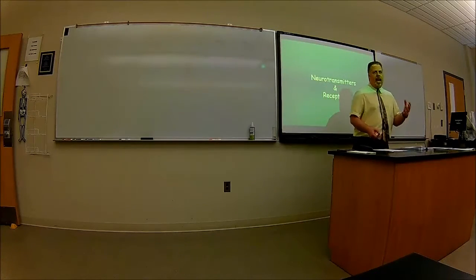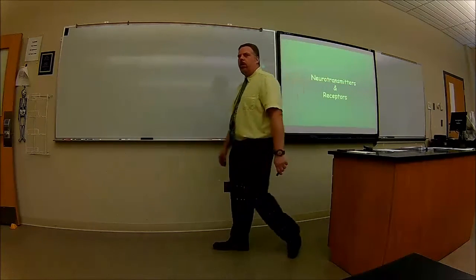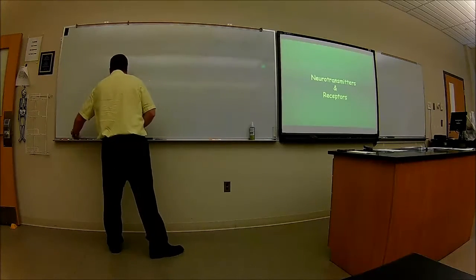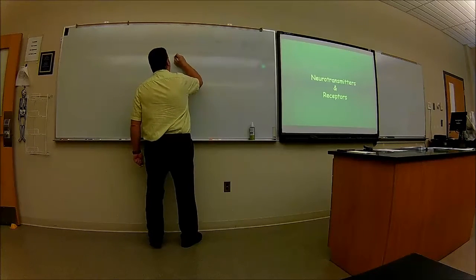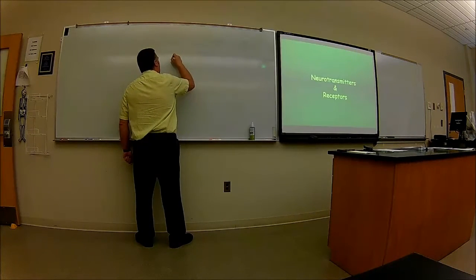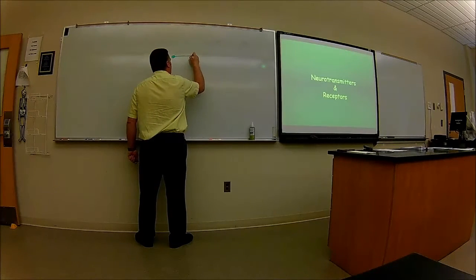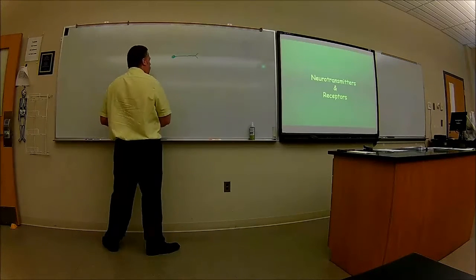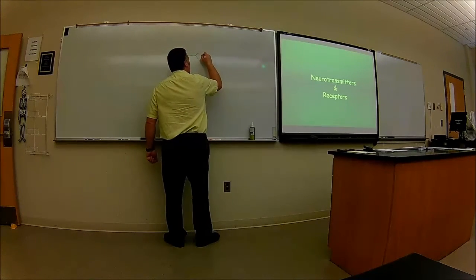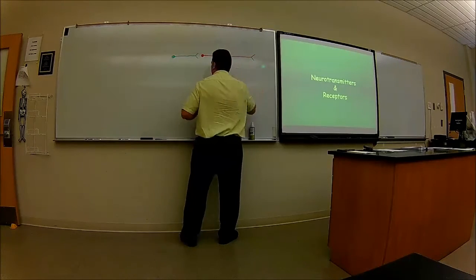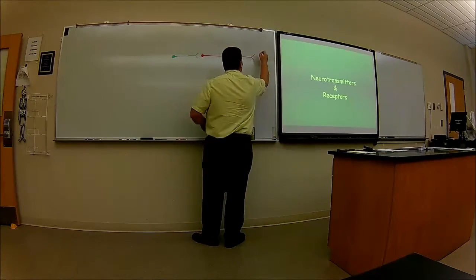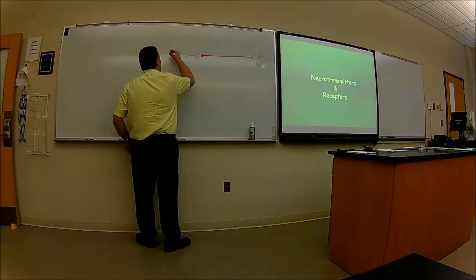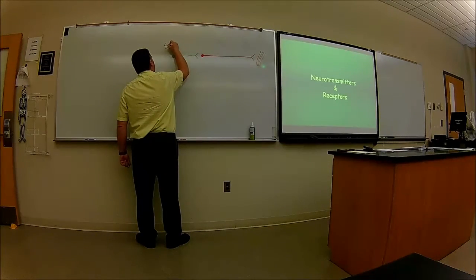We talked about the anatomy of the autonomic nervous system, but now let's get into the nitty-gritty. I'm going to gross up here because I want you to see the difference. We have the pre-ganglionic fiber and the post-ganglionic fiber. This is going to be our sympathetic nervous system.